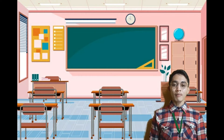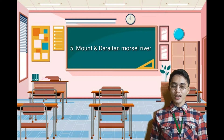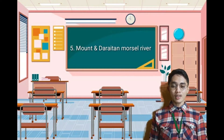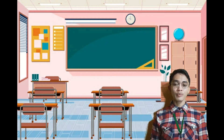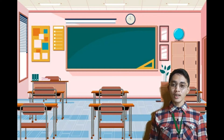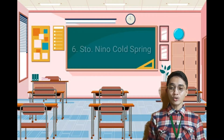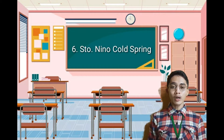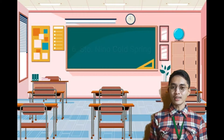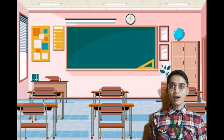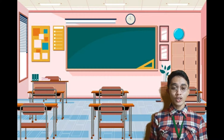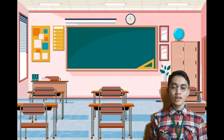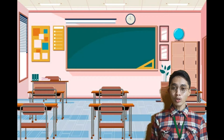Number five is Mount Daraitan and Marella River. This is one of the hiking spots in the Sierra Madre Mountain Range. The easy day hike tour goes to Mount Daraitan and Tinipak River in Rizal from Manila. Number six is Santo Niño Cold Spring, one of the popular tourist spots in Camotes Island. It is a must-see destination and a refreshing swim in its cold water should not be postponed.